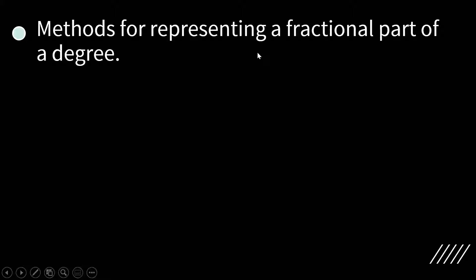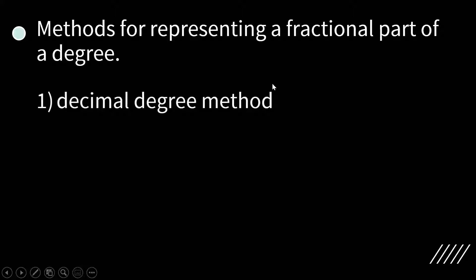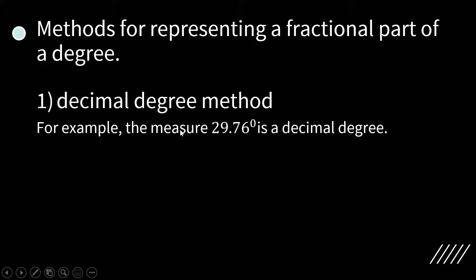Now, let's talk about methods for representing a fractional part of a degree. There are two methods that represent a fractional part of a degree. The first one is the decimal degree method. For example, the measure 29.76 degrees is a decimal degree.